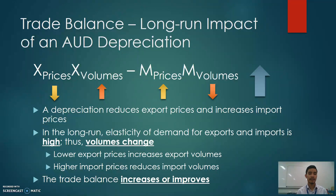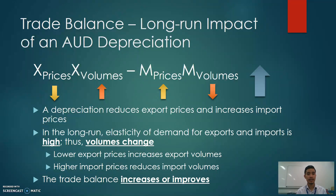On the other hand, if import prices increase, we would expect a decline in import volumes because residents would view the higher import prices negatively. For example, if imported sneakers go from $2 to $4, you might think twice about buying imported goods and consider buying domestically instead. As a result of these two changes — an increase in export volumes and a decrease in import volumes — the trade balance increases or improves overall.